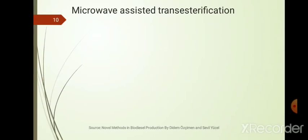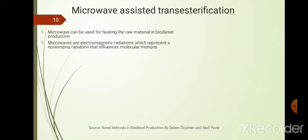Another method is microwave assisted transesterification, where microwaves are used for heating the raw material in biodiesel production. Microwaves have a shorter wavelength near to infrared waves and represent non-ionizing radiation — unlike ultraviolet and other radiations. Although non-ionizing, microwaves can influence molecular motion.